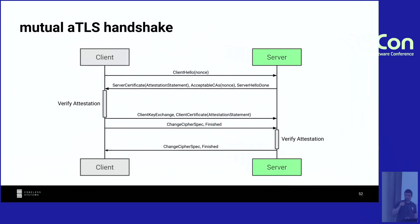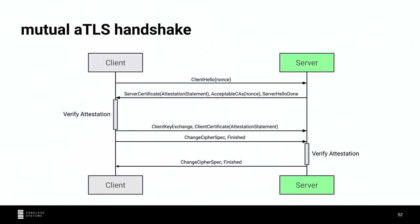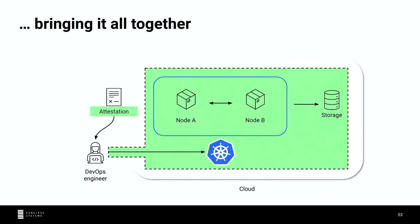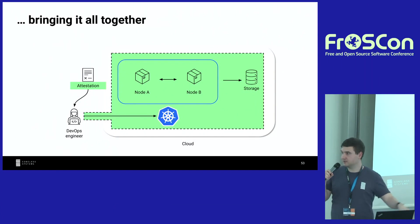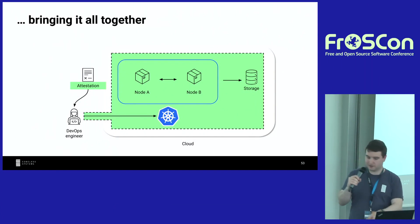Looking deeper at the protocol: a nonce goes one way, an attestation statement comes back, then a second nonce goes back, and a second attestation statement returns — attestation verification happens on both sides. This is how we reach the final state: we perform remote attestation on the first node, and we know that first node will perform the same remote attestation with the rest of the cluster. This is how we know every node is running the software in the state we configured. We also received a TLS certificate and secret key during initialization, so we can securely connect to the Kubernetes cluster and know it's the cluster we initialized.